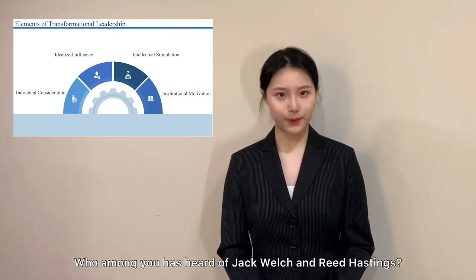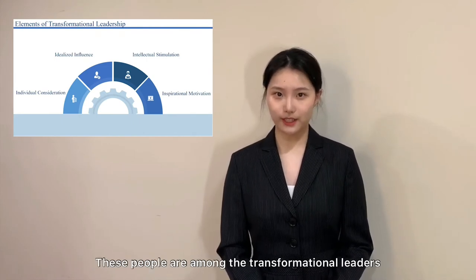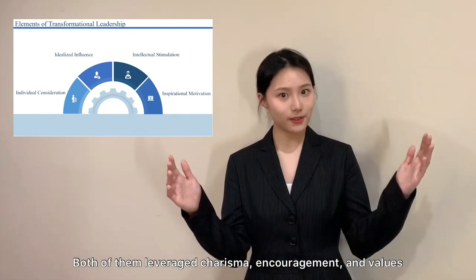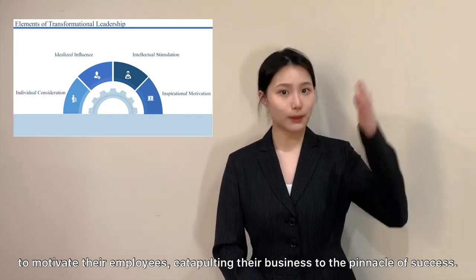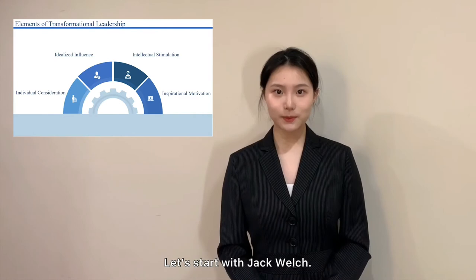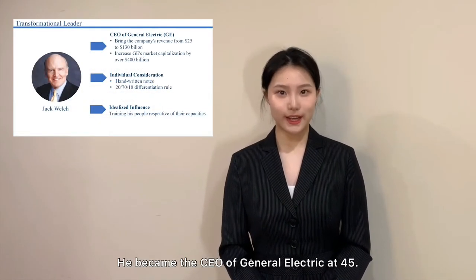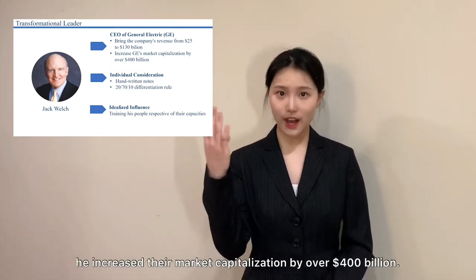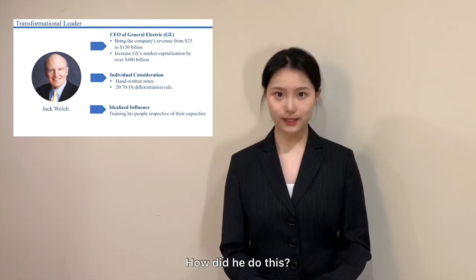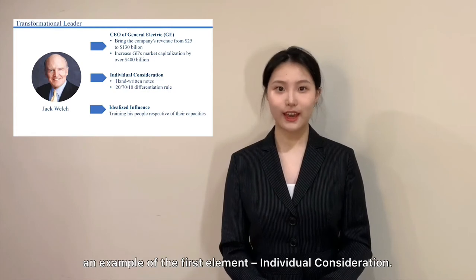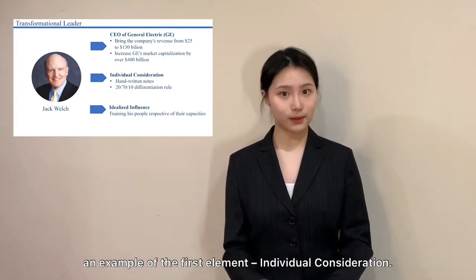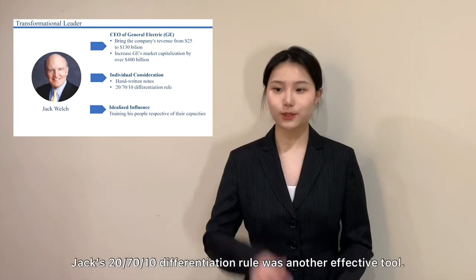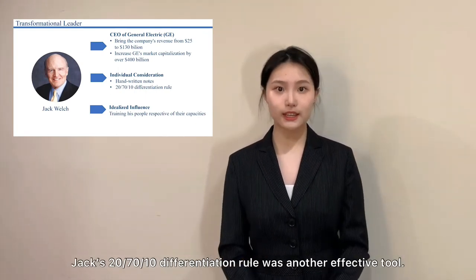Who among you has heard of Jack Welch and Reed Hastings? These people are among the transformational leaders who have raised the pages of business history. Both leverage charisma, encouragement, and values to motivate their employees, catapulting their businesses to the pinnacle of success. Jack Welch became CEO of General Electric at only 45, and in his 20 years as CEO, he increased the market capitalization by over 400 billion dollars. He was famous for his handwritten notes of appreciation — an example of the first element, individual consideration. His personalized notes inspired his employees because they felt known and valued.